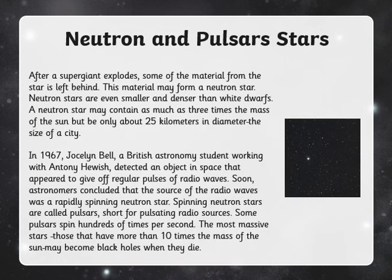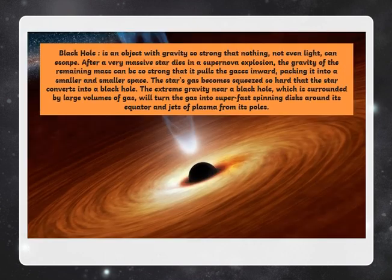We are also going to talk about neutron and pulsar stars, which are some of the smallest and less dense stars, and they are the end of the cycle of stars. At the very end, we can get a black hole — an object whose gravity is so strong that nothing, not even light, can escape from it. This is the last part of the lifespan of a star.